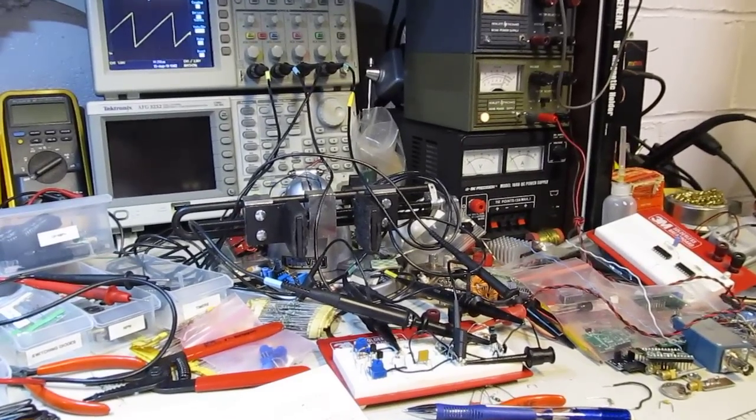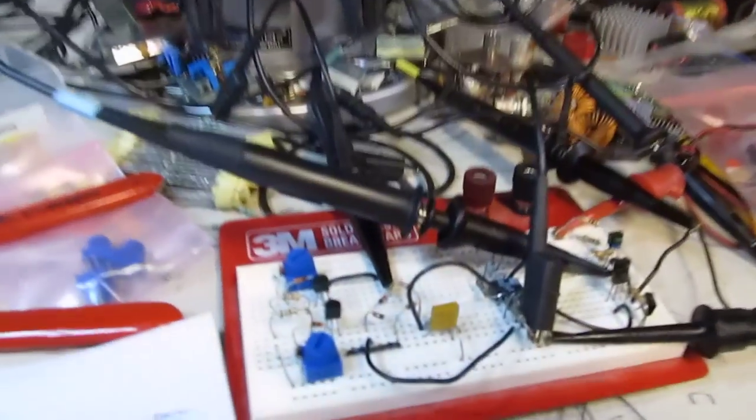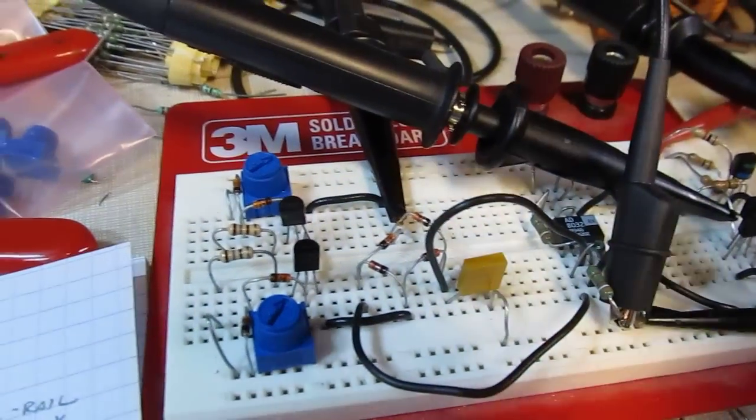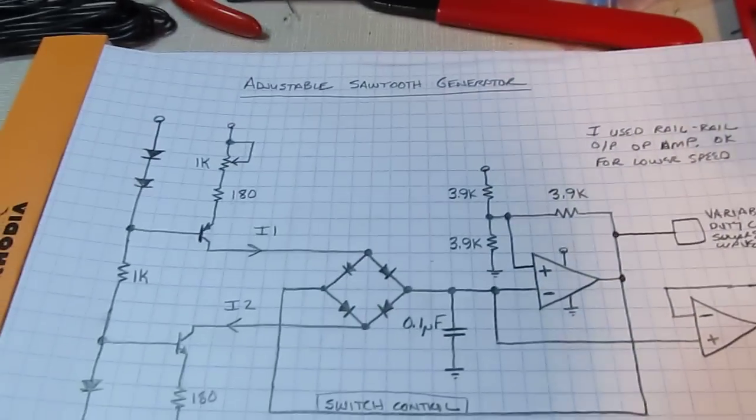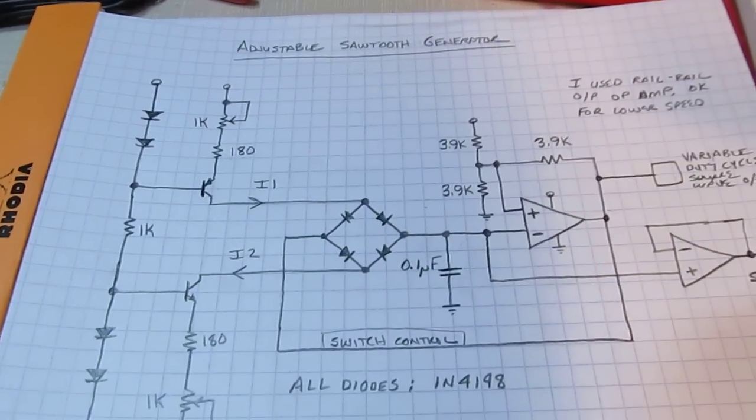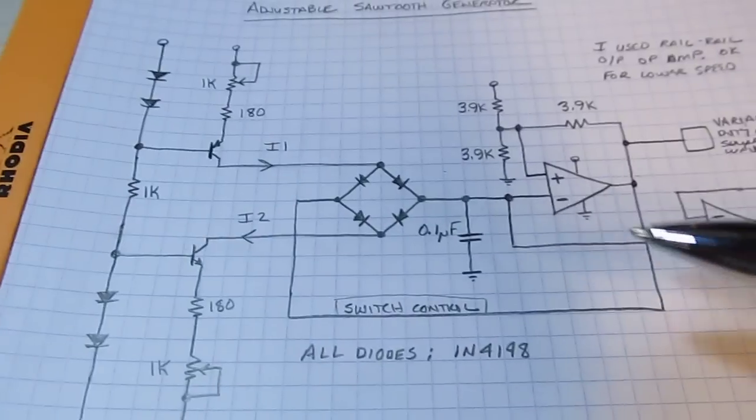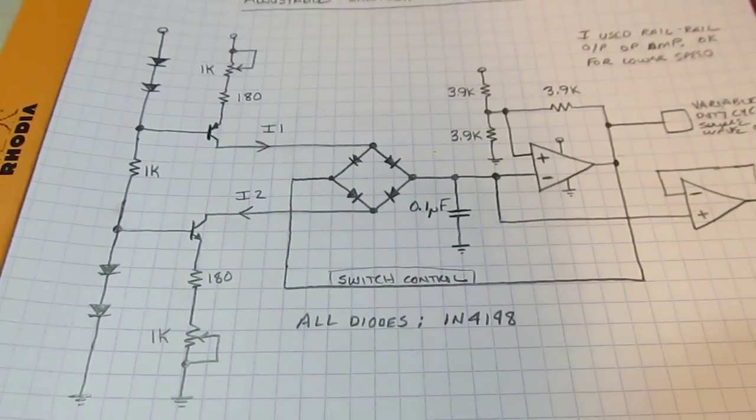We had a short follow-up video today. Last time we took a look at this circuit here, which is this adjustable sawtooth and triangle wave generator with adjustable rising and falling edges and a couple of neat features.